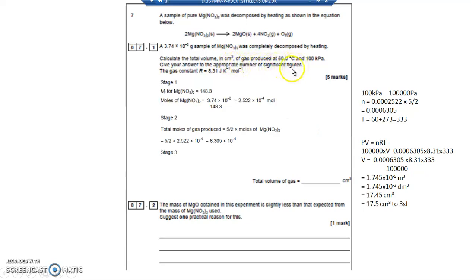However, it says to the appropriate number of significant figures. If you look at all of these, they're all to three significant figures. So let's round this up. I could round it up or down. I always prefer to round up. 17.5 centimetre cubed. Three significant figures.